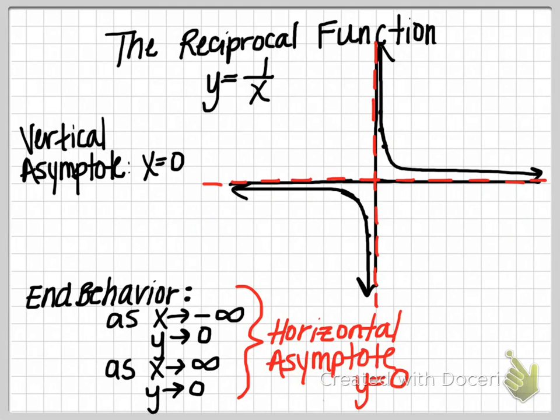We might also notice that there is some symmetry here in this function. We've talked about two different types of symmetry where you can fold the function over the y-axis. That would be symmetry with the y-axis. Those are even functions. And symmetry where you can rotate the function around the origin, what we call origin symmetry, and those functions are odd functions. For this example, you can take this branch here in the first quadrant, and if you were to rotate it around 180 degrees, indeed you would get the resulting mirror image branch that's down in the third quadrant. So that means we do have symmetry. This particular function is an example of an odd function.